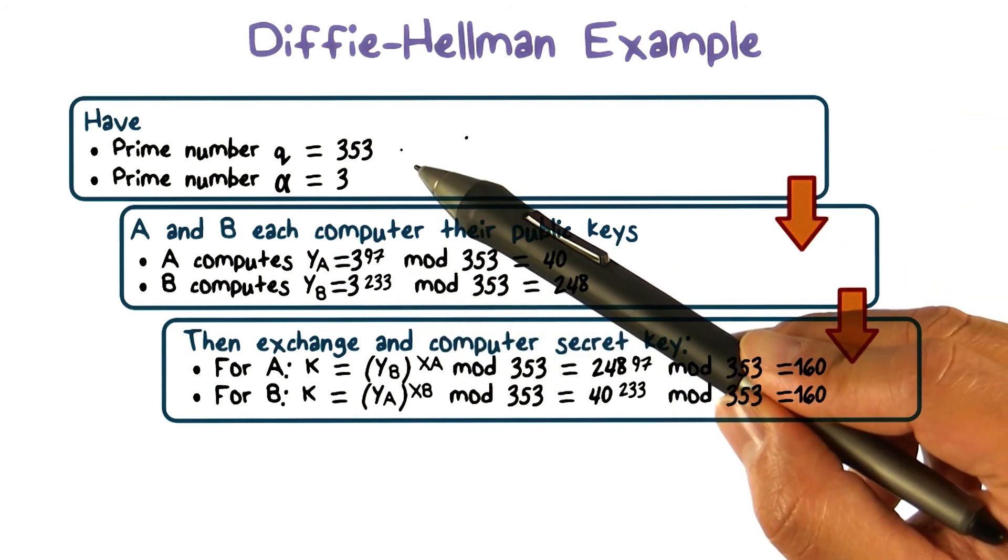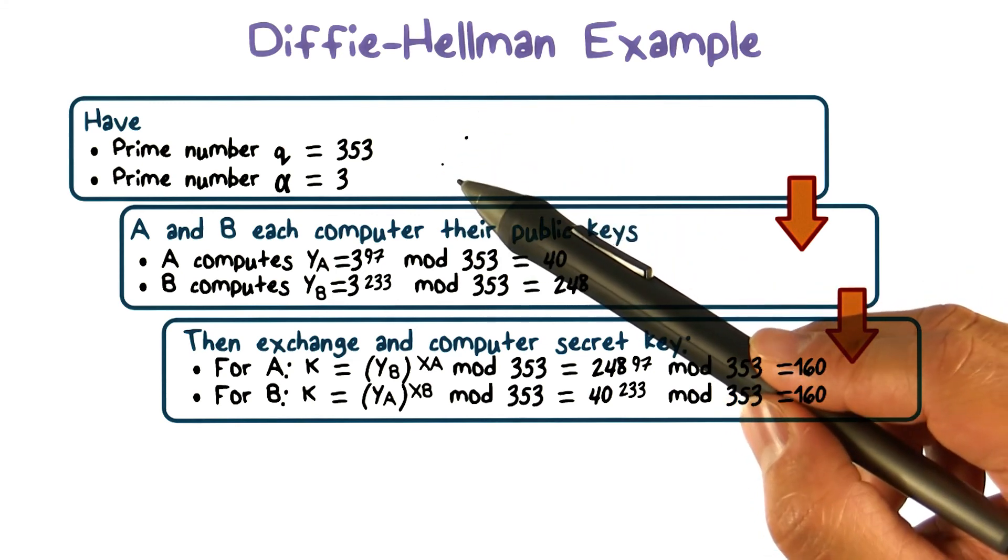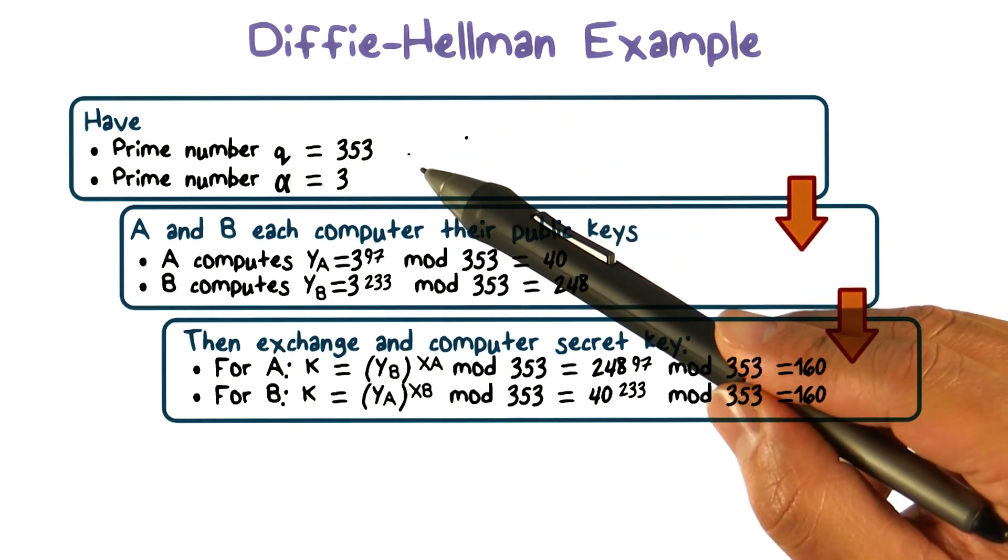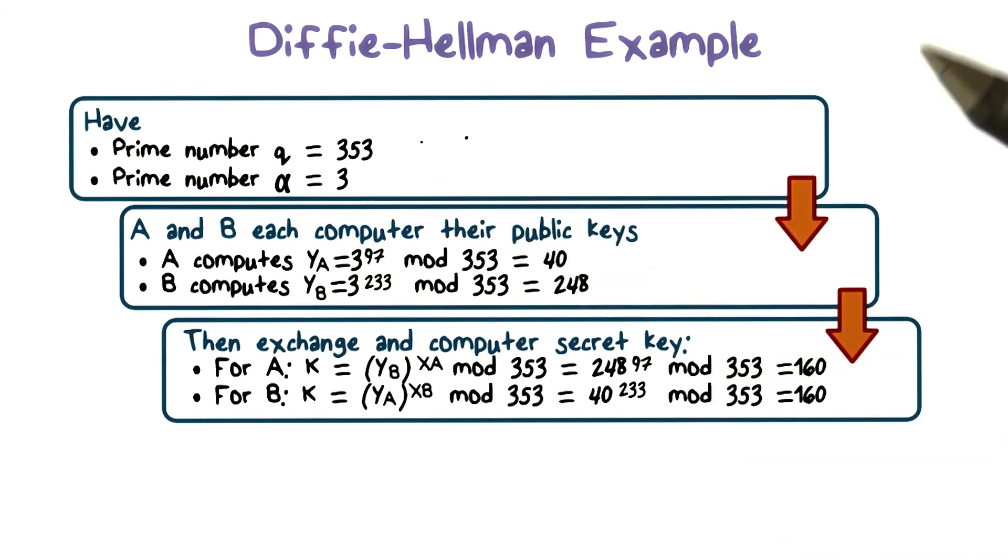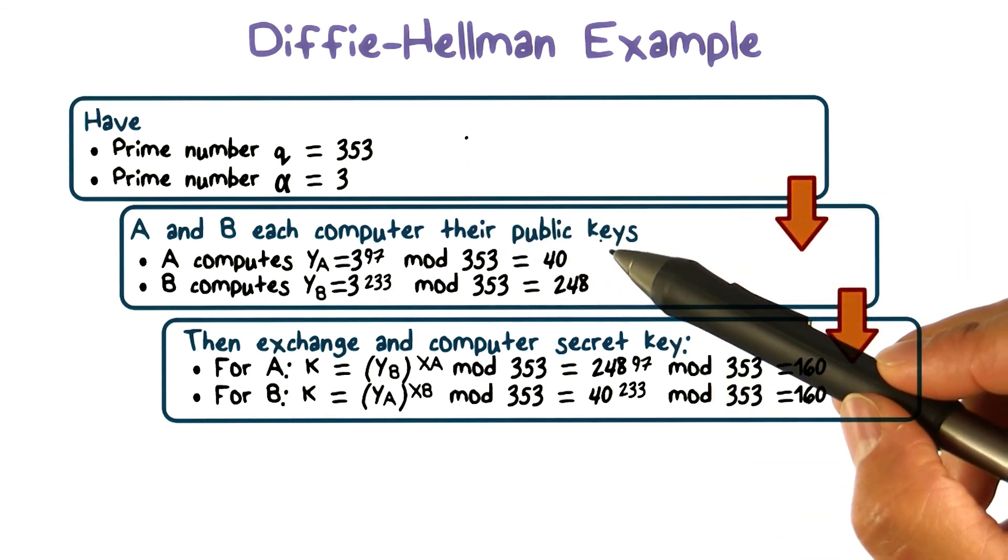However, if very large numbers are involved, such as when the prime number q is at least 300 bits long, then the task of finding xA, the secret value, from yA, the public value, is not feasible.